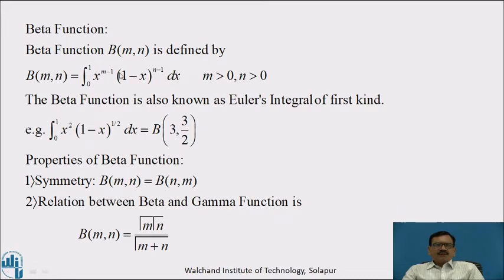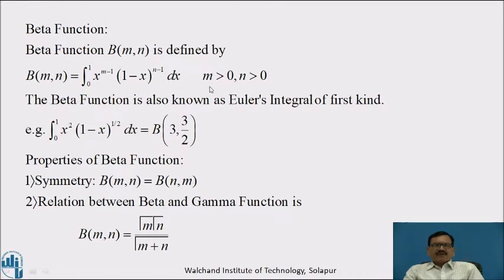Now we will see what is BETA Function. BETA of MN is defined as a function of M and N, denoted by B of MN. Therefore, BETA of MN, i.e., B of MN, is equal to the integration from 0 to 1 of x raised to M minus 1, into 1 minus x raised to N minus 1, dx, where M is greater than 0 and N is greater than 0. The BETA Function is also known as Euler's integral of the first kind; it is a special kind of definite integral.